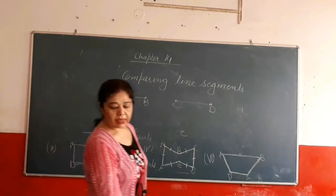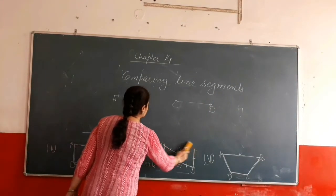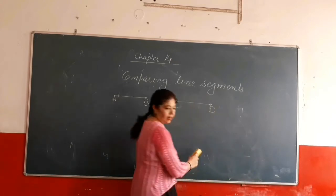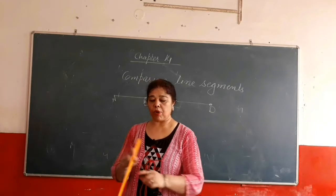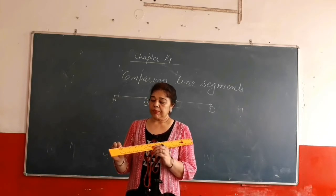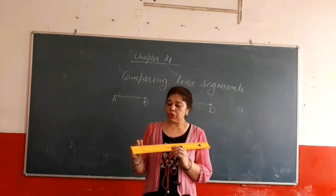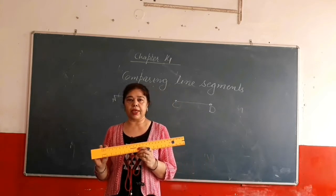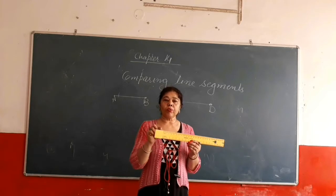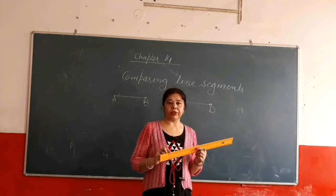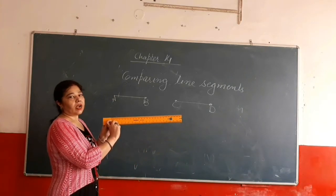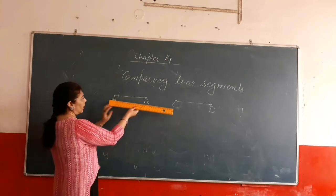Now, how do we measure line segments with a scale? This is the right method to measure a line segment with a scale. You know the scale — it is also in your geometry box. There are division marks on it. The distance between two marks is in centimeters, and there are 10 small divisions in one centimeter. We start measurement from the zero point of the scale.